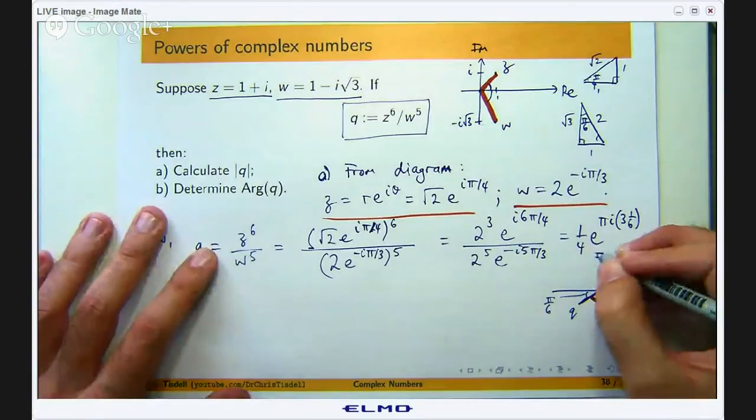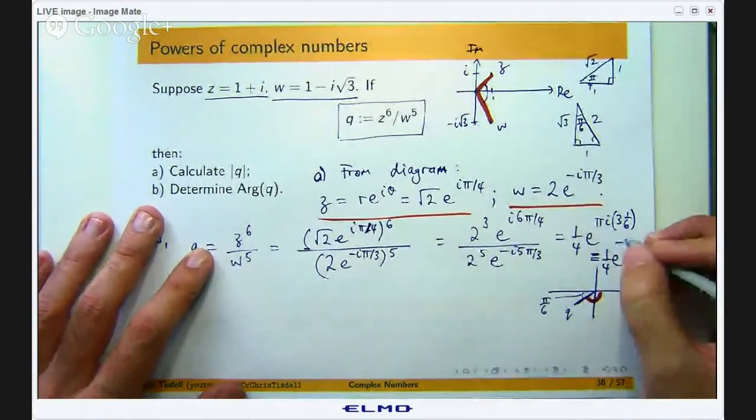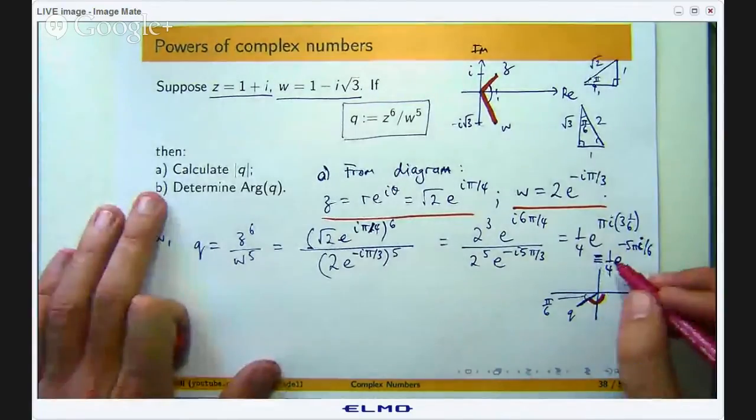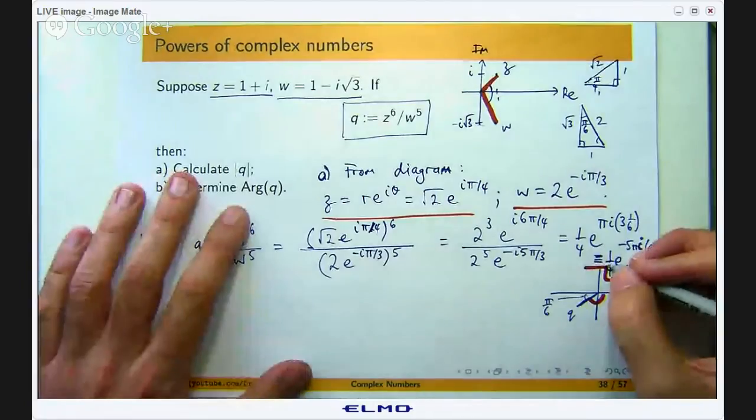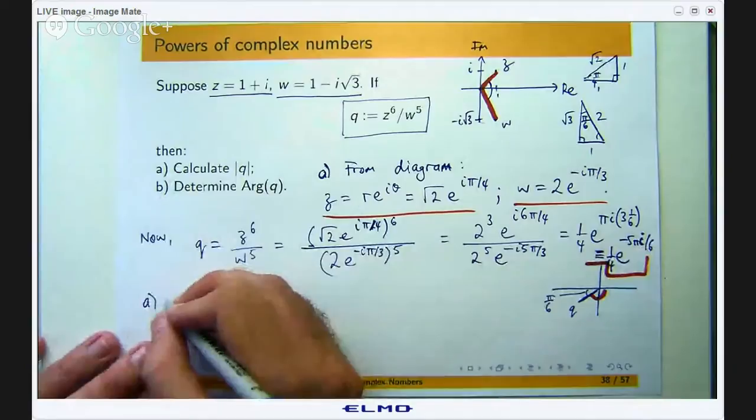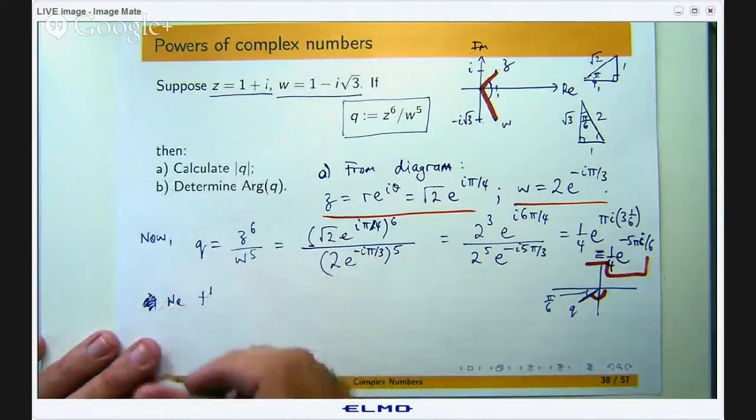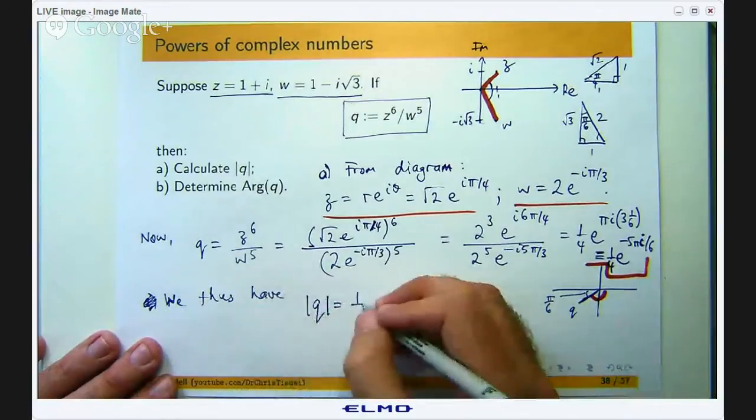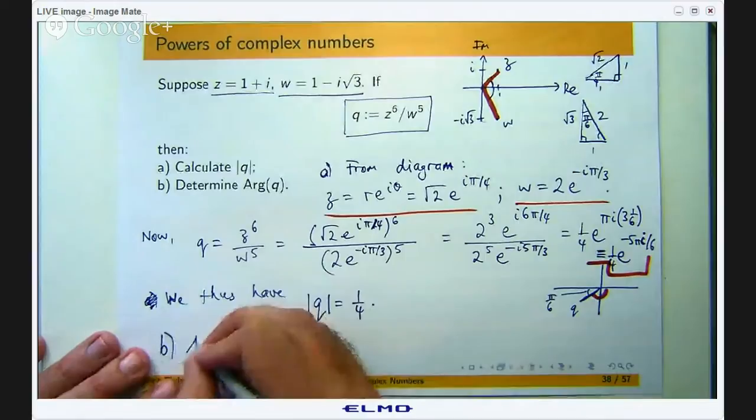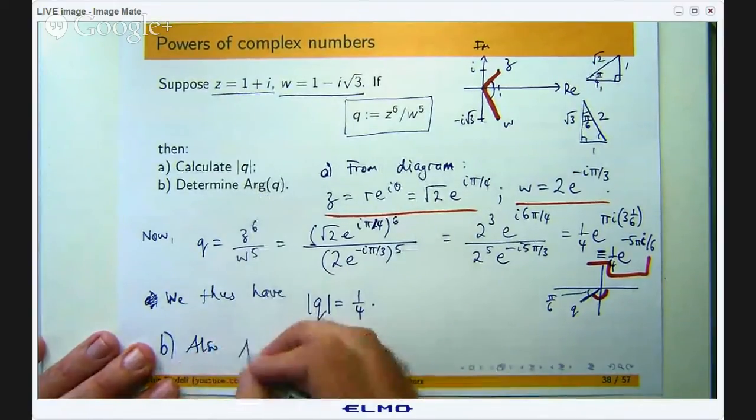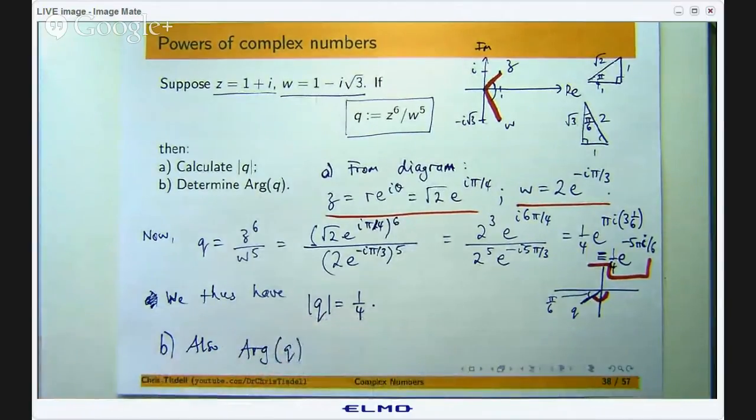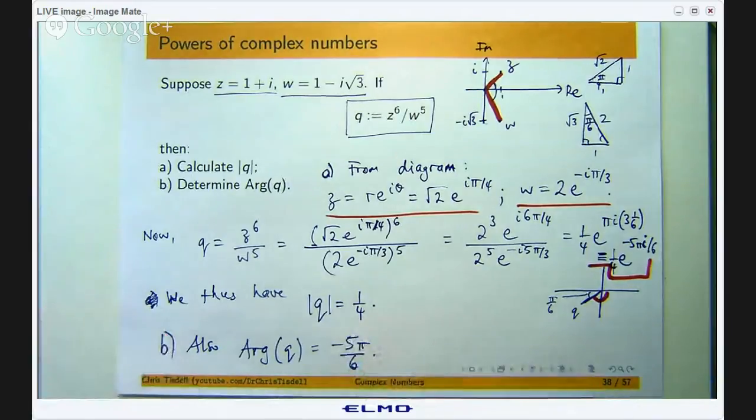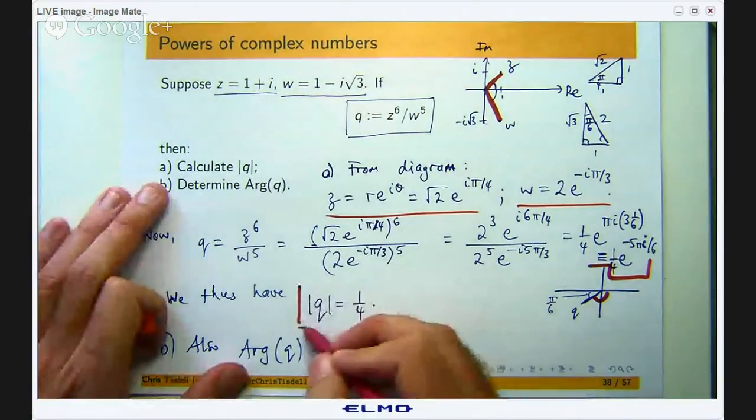Let me write this down. That is my q and from this we can write down a and b. The principal argument which is always between negative π and π in my series of videos, that will be that angle there, negative 5π on 6. Some books have the principal argument between 0 and 2π but I am not going to do it that way.